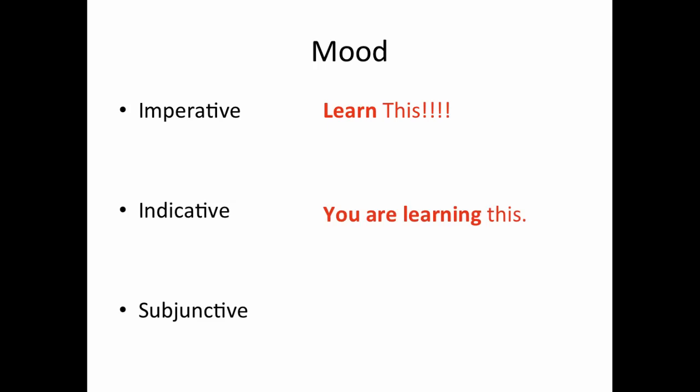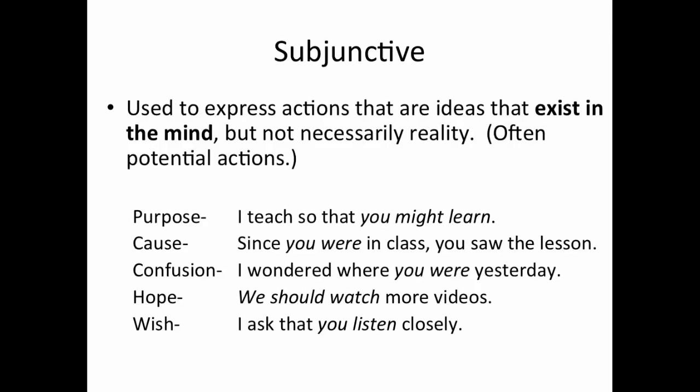Indicative — literally you're just indicating something, so the way in which it's expressed is a showing way or a telling way. And then the subjunctive: 'I am typing so that you might learn this.' Subjunctive often refers to actions that are potential, or might happen, or exist in the mind, but not necessarily in action. The formal definition is that it's used to express actions or ideas that exist in the mind but not necessarily in reality. They're often potential actions.